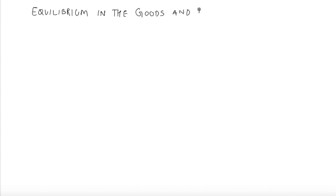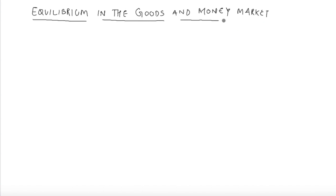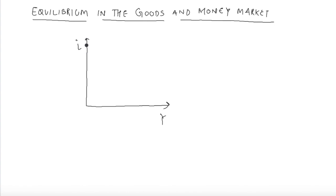Now that we have discussed the IS and the LM curve, it's time to bring them together and understand the equilibrium in the economy as a whole. Today we are going to talk about the equilibrium in the goods and money market - how goods and money market are in equilibrium. We will use our framework of the interest rate and income, with the Y axis as interest rate and X axis as income, and I will now plot both the IS and the LM curve together.